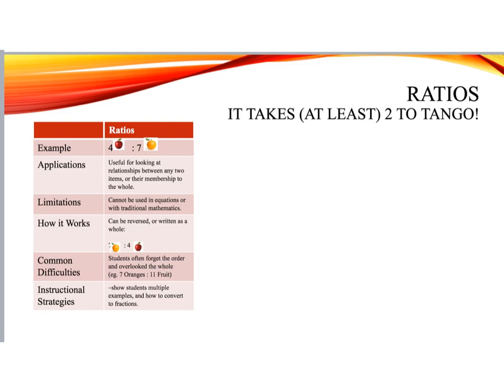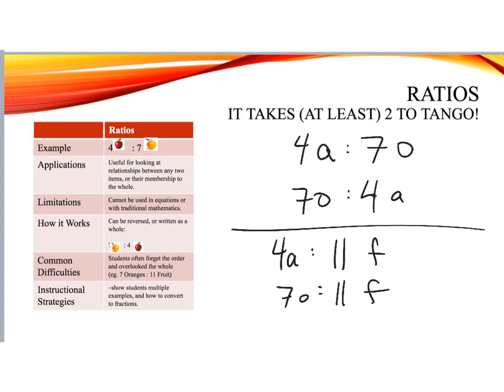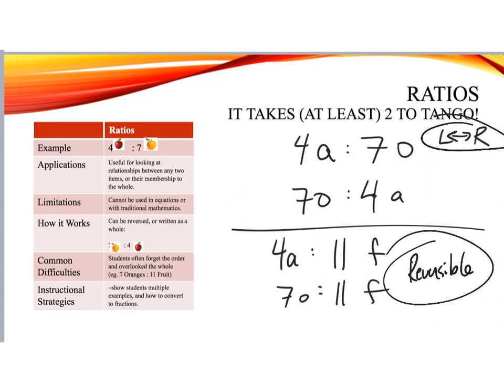So now let's look at ratios. In here, I use the phrase, it takes at least two to tango. It's not a ratio if you're not comparing two things. So here we see four apples, which I'll represent with the letter A, to seven oranges. But there are other ways to represent this. We could say seven oranges and four apples. But there's a whole other way. We could say four apples to 11 fruit. We could also say seven oranges to 11 fruit. And we could reverse those as well. For every 11 fruit, there will be seven oranges. So these read left to right, but they are also reversible. A lot of the other ways in which we represent numbers, they are not reversible. But in ratios, they are. You can think of them as mirrors of a sort. Students often forget the order in which they are looking at things, and they also tend to overlook the entire ratio.